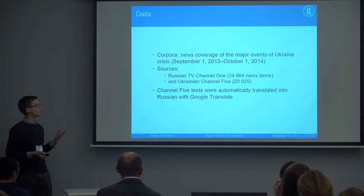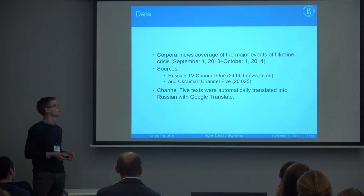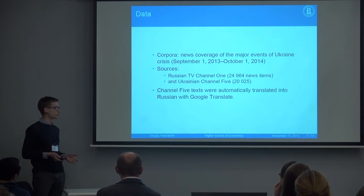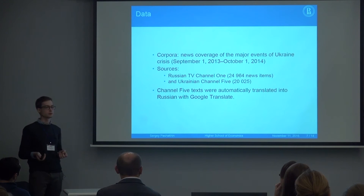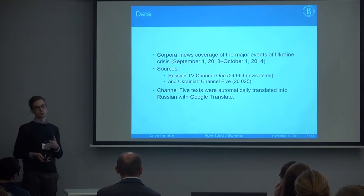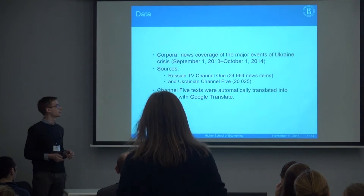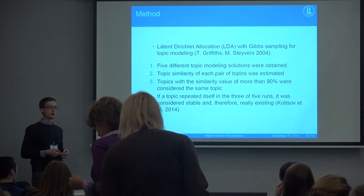My data is news coverage of major events of the Ukraine crisis from September 1, 2013 to October 1, 2014. It includes major events such as protests on Maidan Square, presidential elections, sanctions against Russia, and armed conflicts in southeast Ukraine. My sources are official TV websites — Channel 1 Russian and Ukrainian Channel 5. To produce joint topic modeling, I had to translate from Ukrainian into Russian using Google Translate. I used LDA, described in the literature as the state-of-the-art technique.